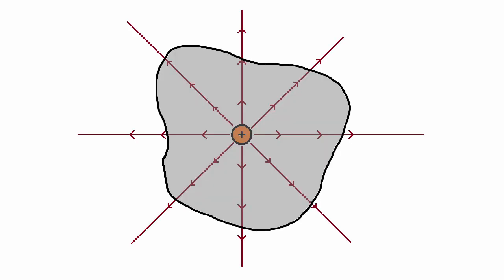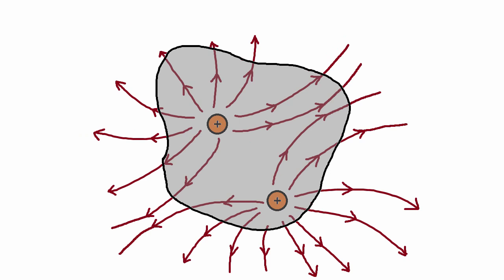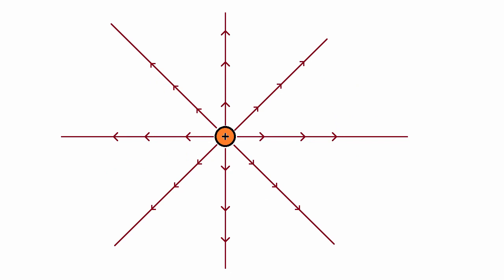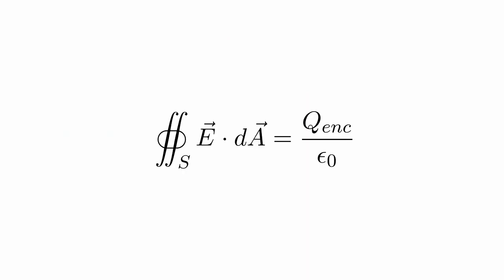So if we have a positive charge, there'll be a net positive flux. If we have a negative charge, then we will have a net negative flux. If we don't have much charge, there won't be much flux; but if we have a lot of charge, there'll be a lot more flux. And if we have no net charge, or equal amounts of positive and negative charge, then the total flux will be zero. And if we have a single charge that happens to be outside our volume, there will still be no net flux. There is another way that we can describe Gauss's law.